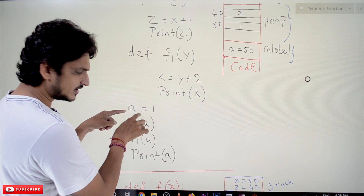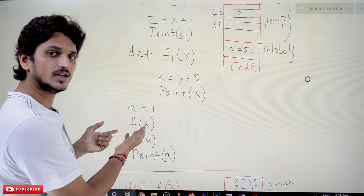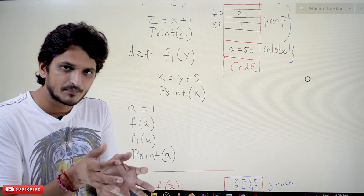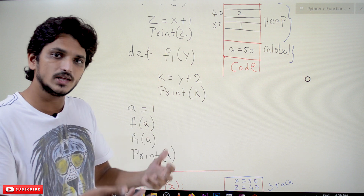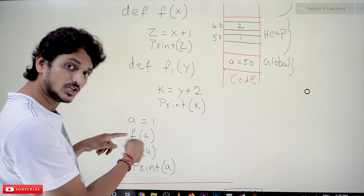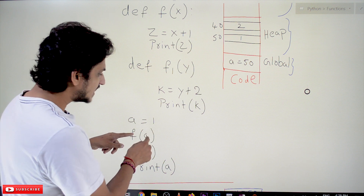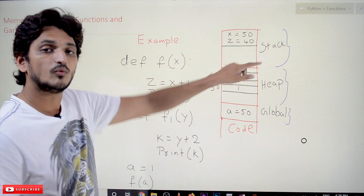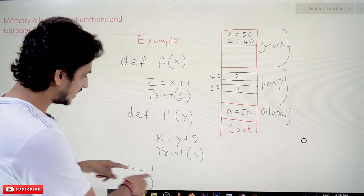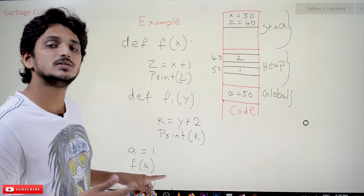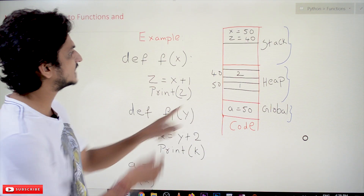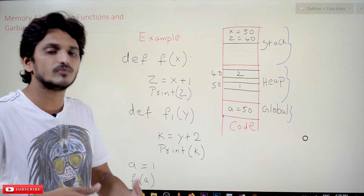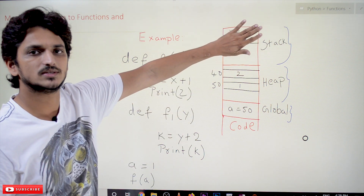Next, the line calling function f gets executed. Whenever we call the function, the Python compiler assigns some space in the stack for that function. Why does the function need that space? In order to save the variables present in the function — x and z are variables in the function. To save the references of those variables, it assigns some space in the stack.